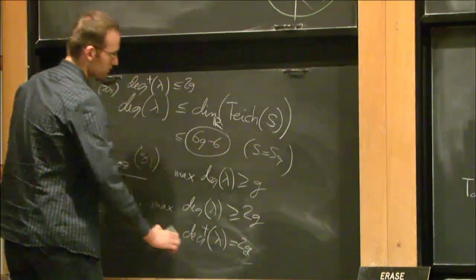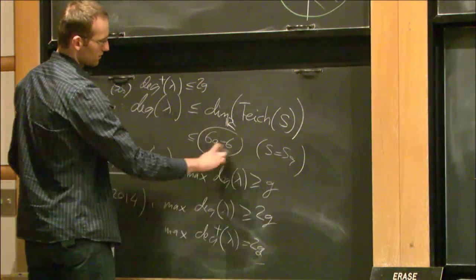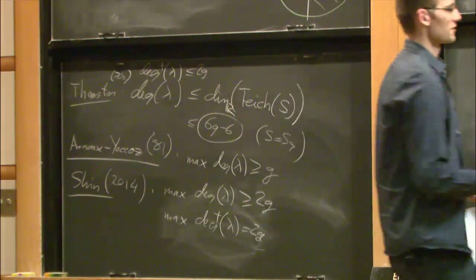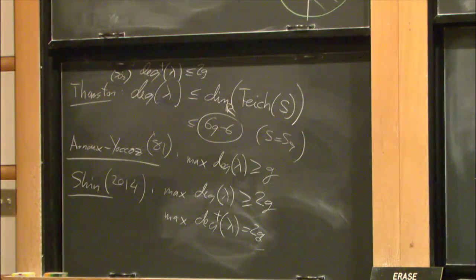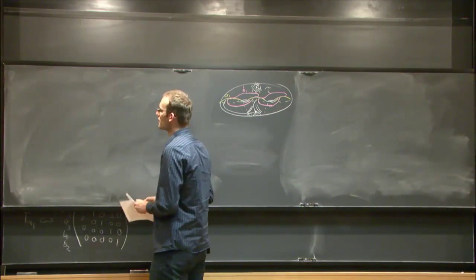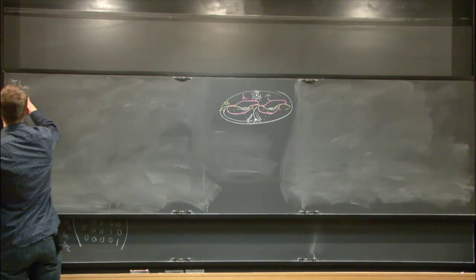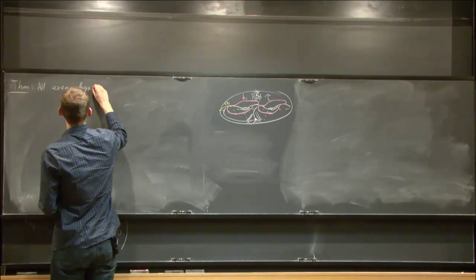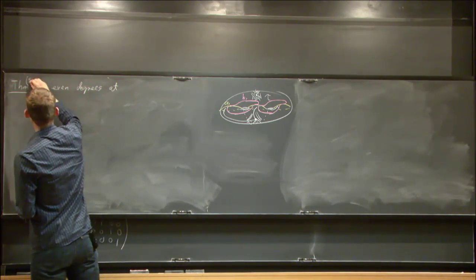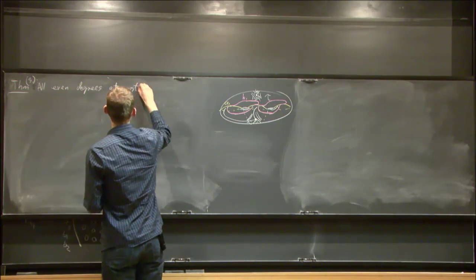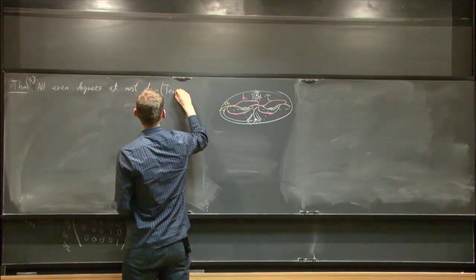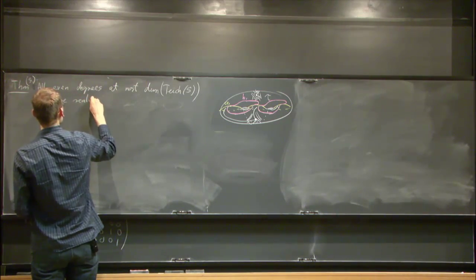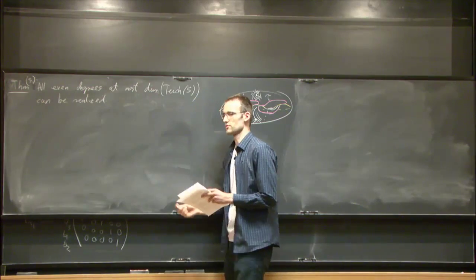The main question I was thinking about is whether and how one can realize the 6g minus 6 maximum degree, which Thurston claims in one of his papers is possible but does not prove. It turns out that all even degrees at most the dimension of the Teichmüller space can be realized. This is the other main theorem I want to talk about today.